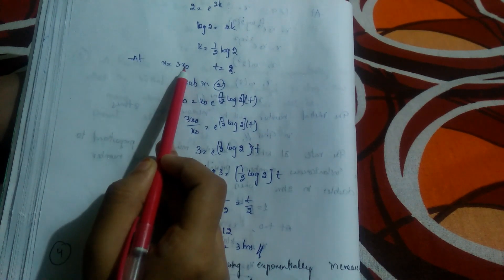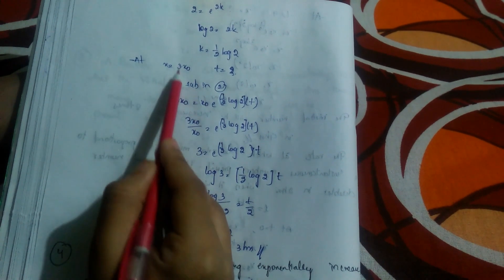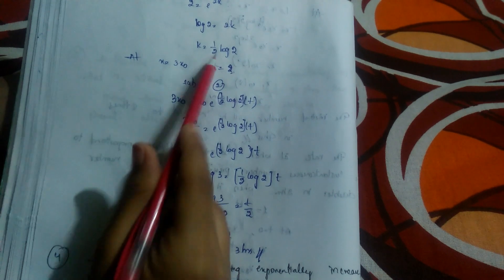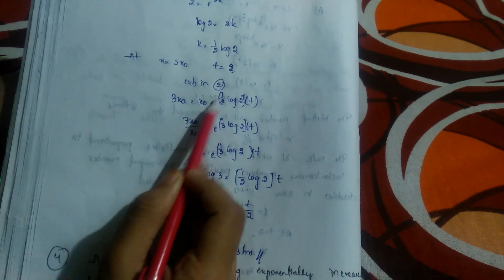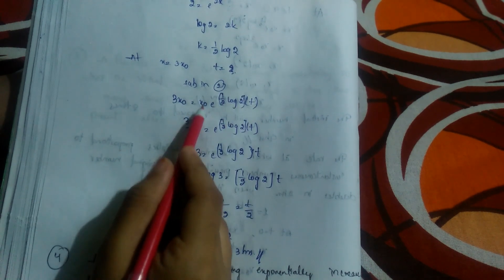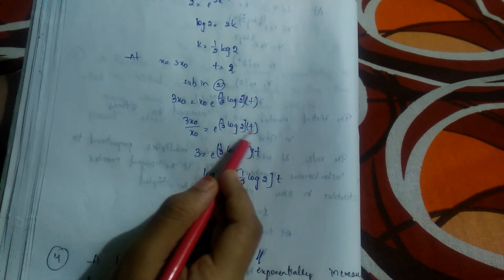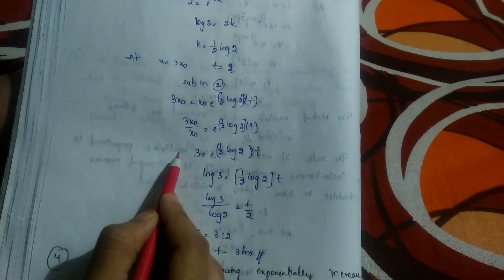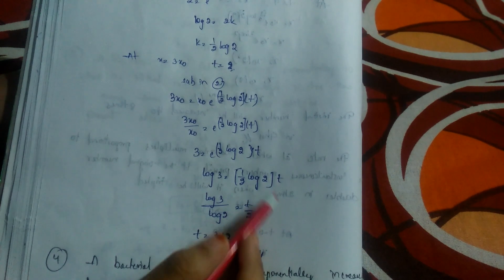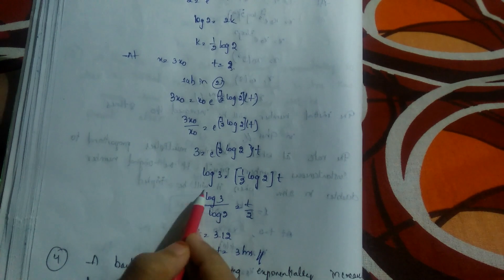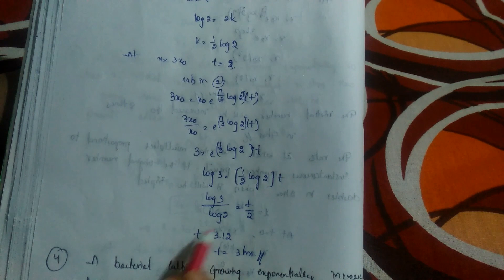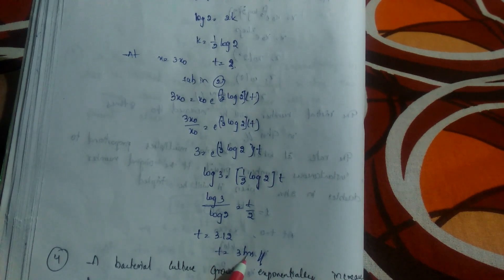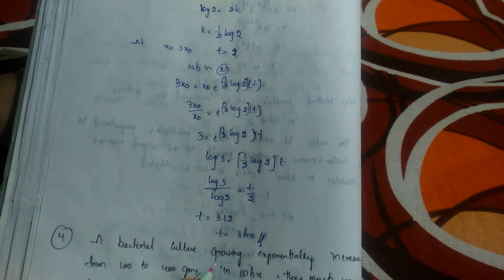From 2 = e^(2k): log 2 = 2k, so k = (1/2)·log 2. We need to find t when x = 3x₀ (tripled): substituting in equation 2 gives 3x₀ = x₀·e^((1/2)·log 2 · t), so 3 = e^((t/2)·log 2). Removing the exponential: log 3 = (1/2)·log 2 · t, so log 3 / log 2 = t/2, giving t = 2·(log 3 / log 2) ≈ 3.12 hours.